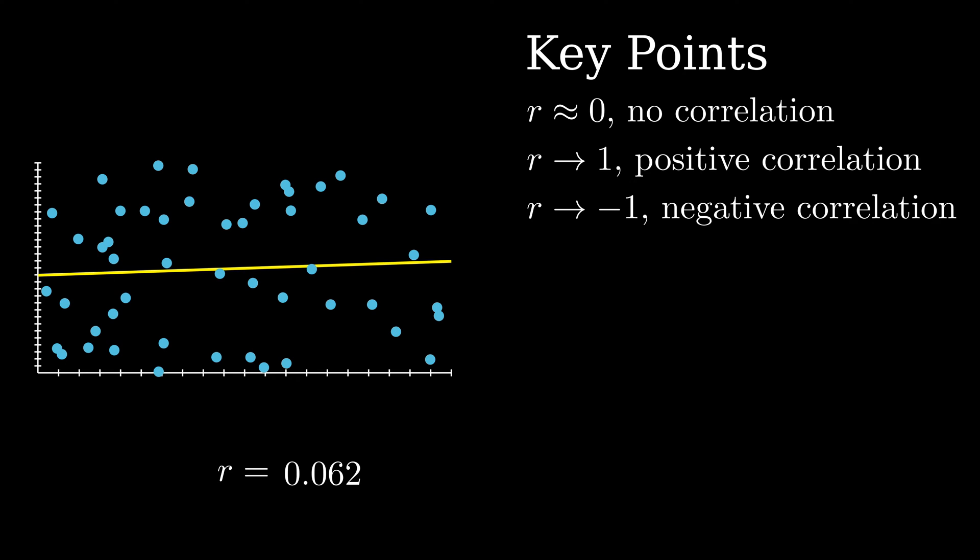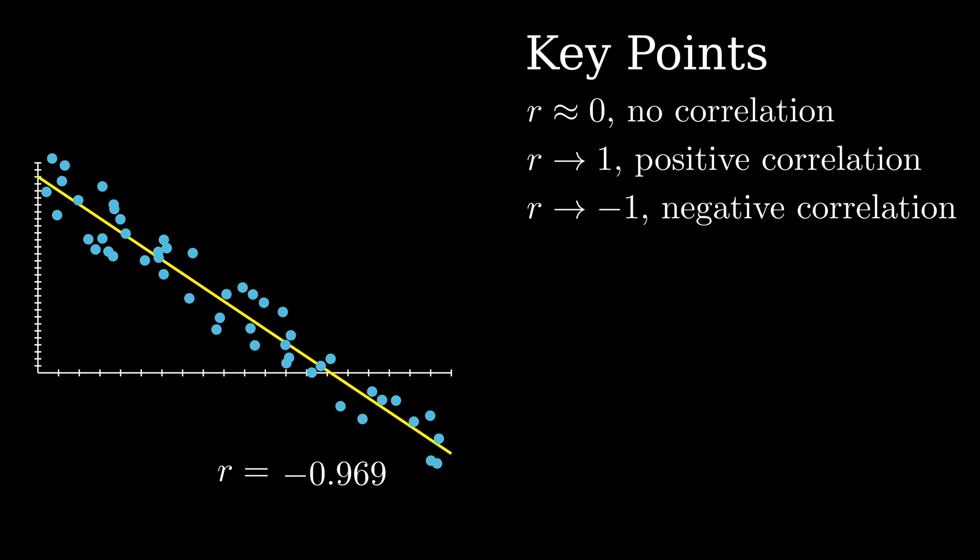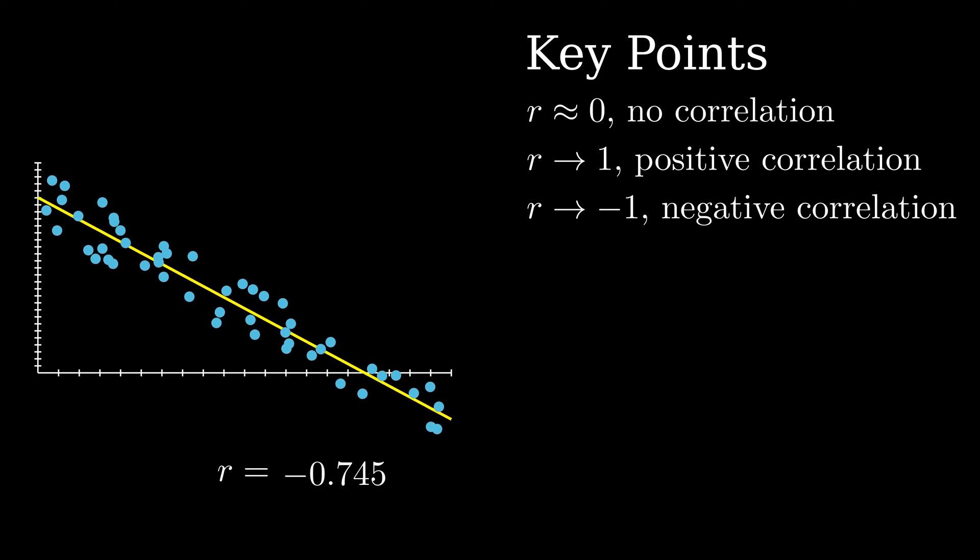When r approaches 0, it indicates there is no correlation. If r approaches 1, it indicates a positive correlation. If r approaches negative 1, it indicates a negative correlation.